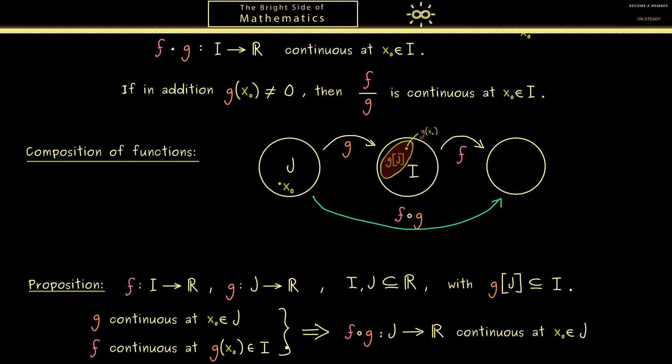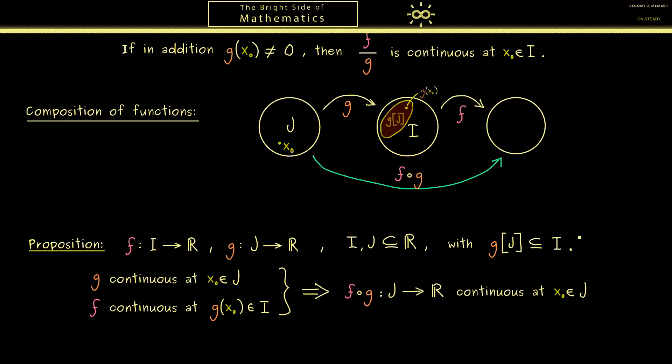So this is our nice result here. Composition conserves continuity. It's formulated for one point x0 but as always we can lift that easily to all points. So if g and f are continuous at all points then the composition is also continuous at all points. Indeed this is a case we often have.